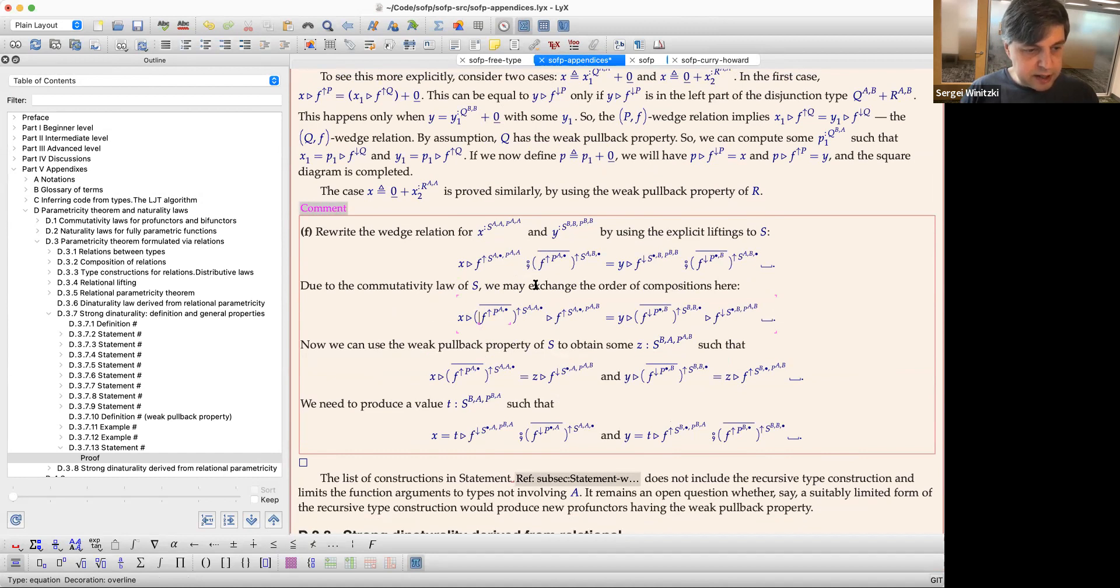So I see in the title, in the status line, type equation, decoration, overline. So I'm right here. I do a backspace. The overline is gone.